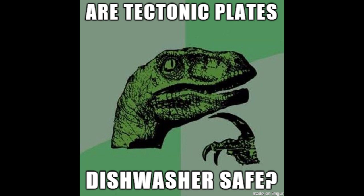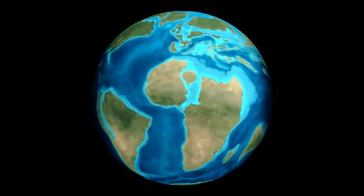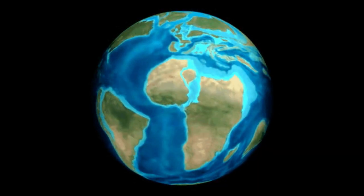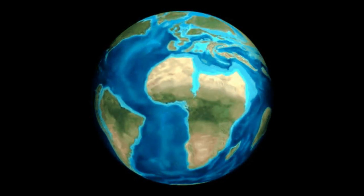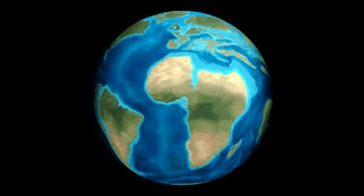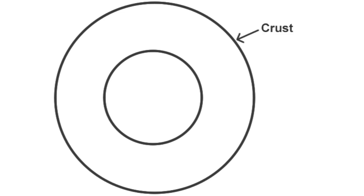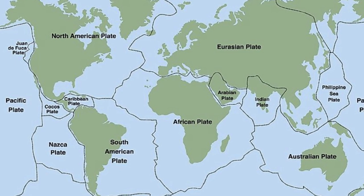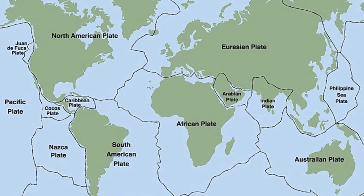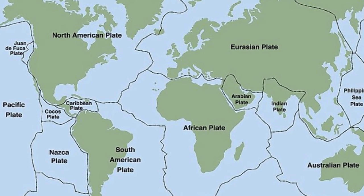Oceanic and continental plates come together, spread apart, and interact at plate boundaries all over the planet. The lithosphere is the rigid, rocky outer part of Earth, consisting of the crust that we live on and the upper mantle. The lithosphere is made up of approximately seven major tectonic plates and many other minor or smaller ones.